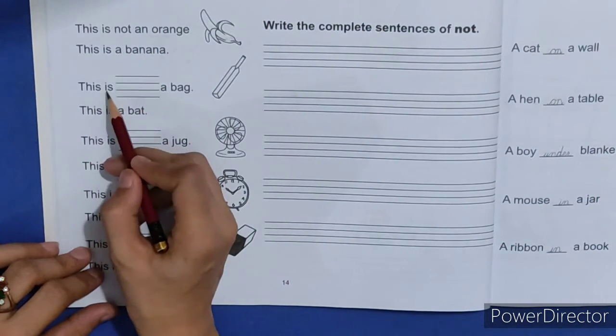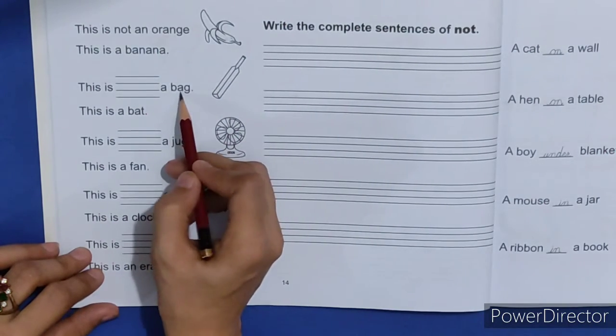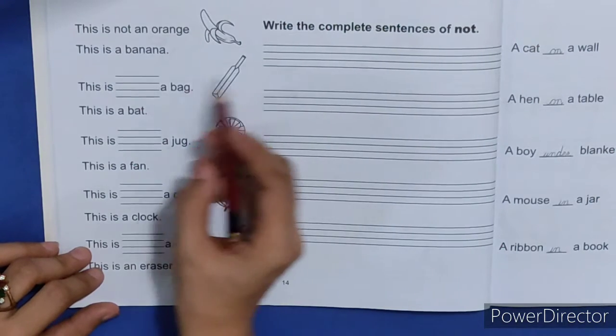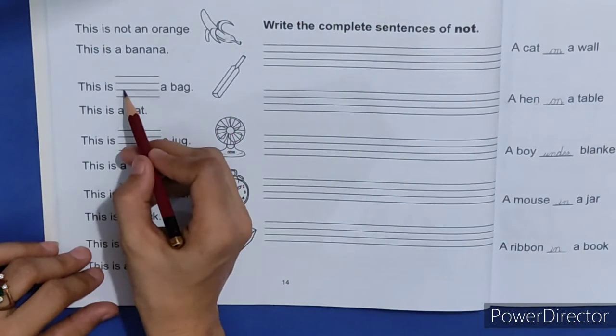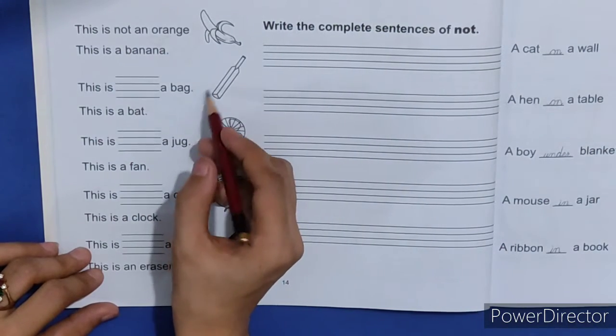This is dash a bat. Toh piyare bacho yahaan padi ye bat likha wa hai toh bat nahi hai. Ye kya hai? Bat hai. Toh yahaan pere hain not likhenge. This is not a bag. Ye bag nahi hai.